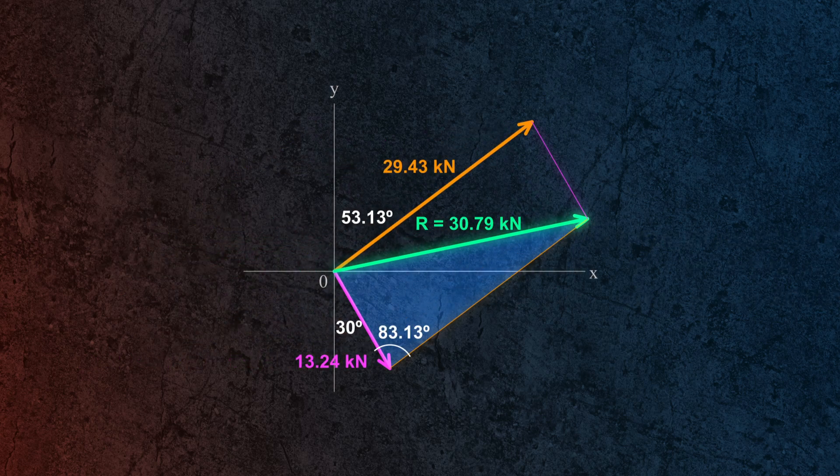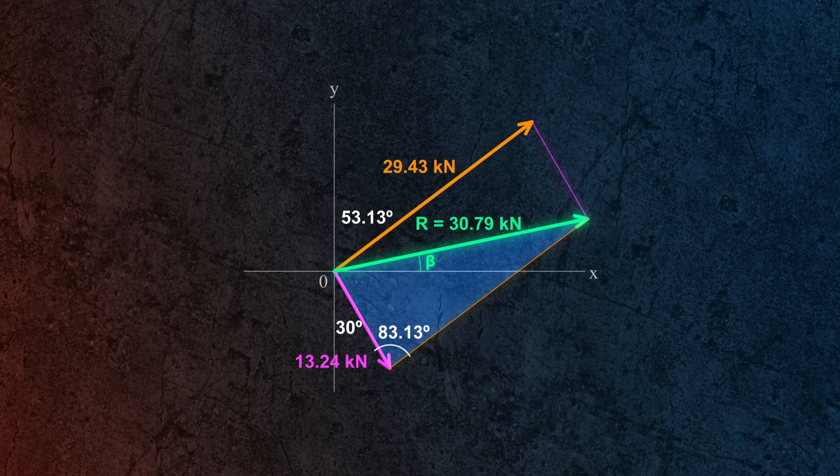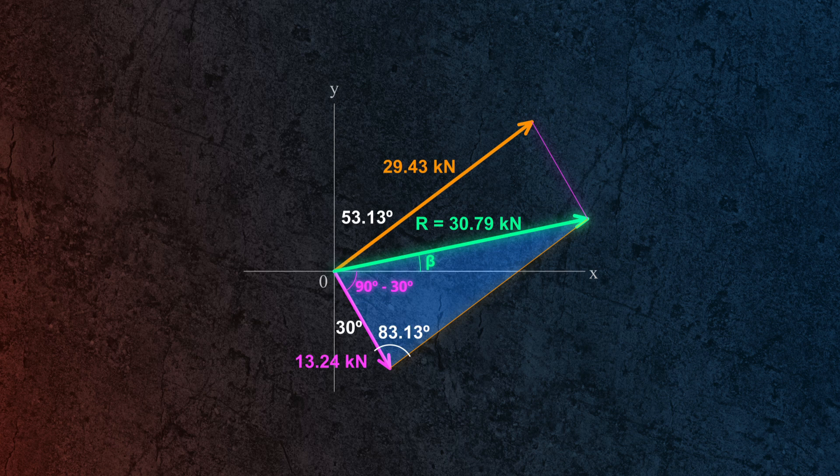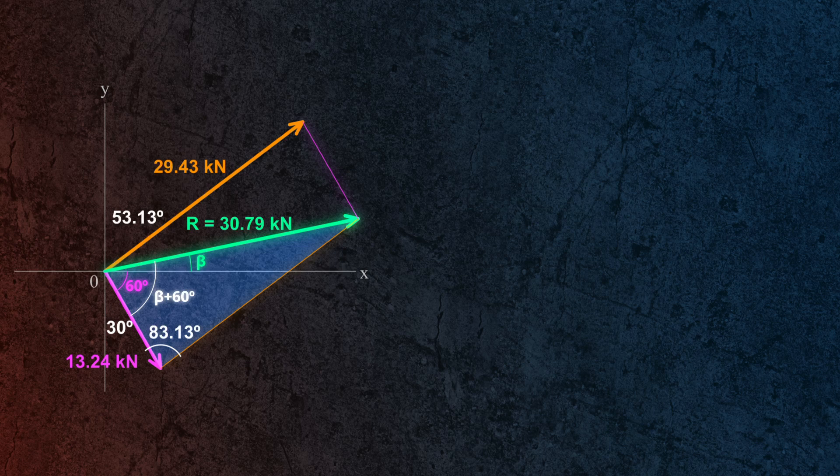Next let's solve for the angle of the resultant from the x-axis. We'll call this angle beta. The angle of F1 from the x-axis is 90 minus 30 degrees or equal to 60 degrees. That means the included angle between F1 and the resultant is beta plus 60 degrees. Now we can use the sine law to solve for beta.